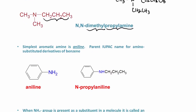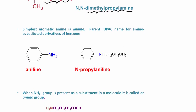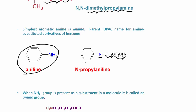The simplest aromatic amine is aniline, and you already know this from previous chapters. So in this case we have a benzene ring — we name this as aniline because of that nitrogen. But here we have this propyl group, so this would be N-propylaniline.